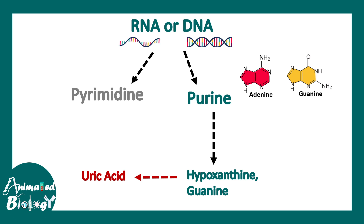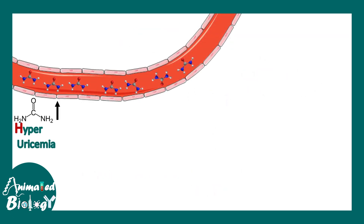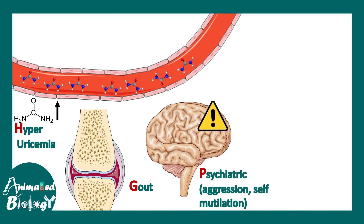If uric acid starts to accumulate in the body — by increased production or decreased excretion — the levels of uric acid in the blood rise. This is known as hyperuricemia. Hyperuricemia leads to deposition of uric acid crystals in joints, leading to gout.